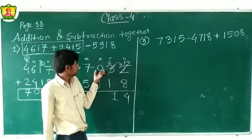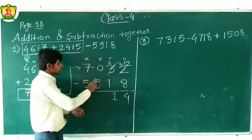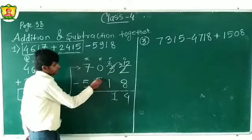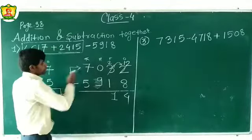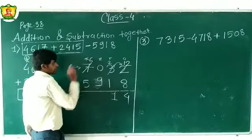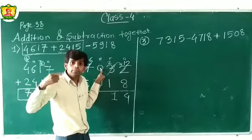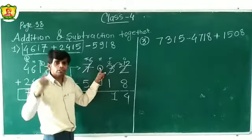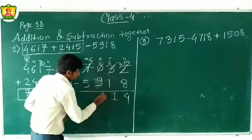At the hundreds place there is zero. We have to subtract nine from zero — not possible. So we take a borrow from the thousands place. When a number takes a borrow, it increases by ten, because one thousand equals ten hundreds. So seven thousand becomes six thousand, and zero plus ten gives ten. Ten minus nine gives one.